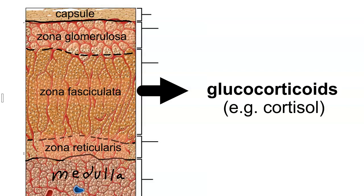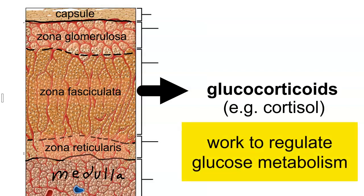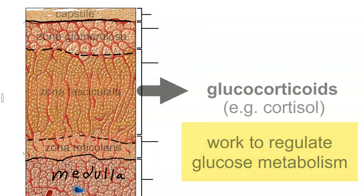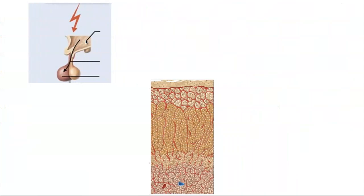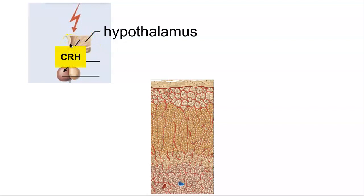Glucocorticoids work to regulate the metabolism of glucose. Taking a closer look at the regulation of cortisol secretion, the hypothalamus secretes a hormone called corticotropin-releasing hormone, or CRH.